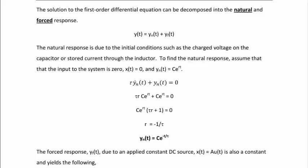The solution to a first-order differential equation can be decomposed into the natural and forced response. The natural response is due to initial conditions such as the charge voltage on the capacitor or stored current through the inductor, and the forced response is due to the application of a DC source. To find the natural response, assume the input is zero. The natural response has the form Y_n(t) = Ce^(rt). Substituting into the differential equation tau·Ẏ_n + Y_n = 0, and factoring out Ce^(rt), we get tau·r + 1 = 0, so r = -1/tau.